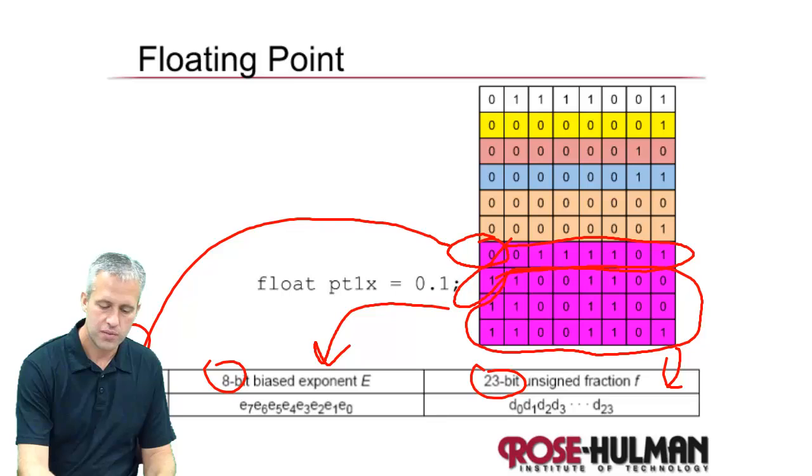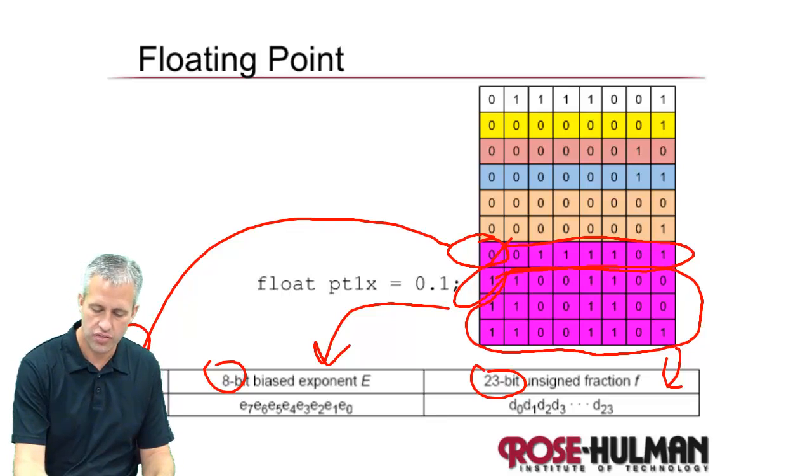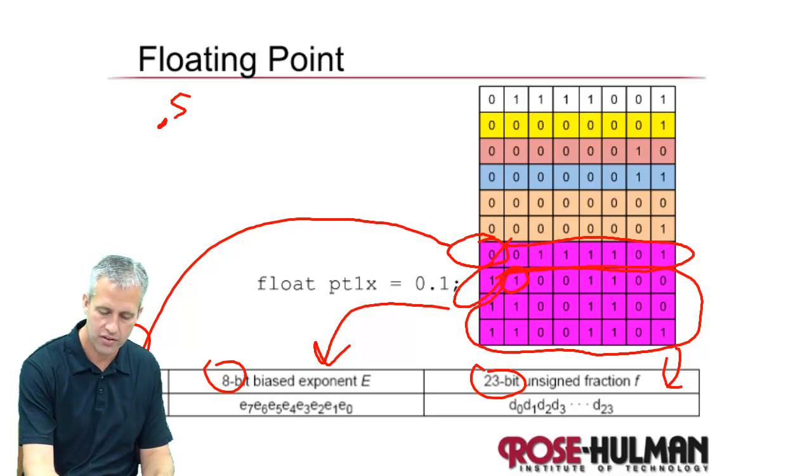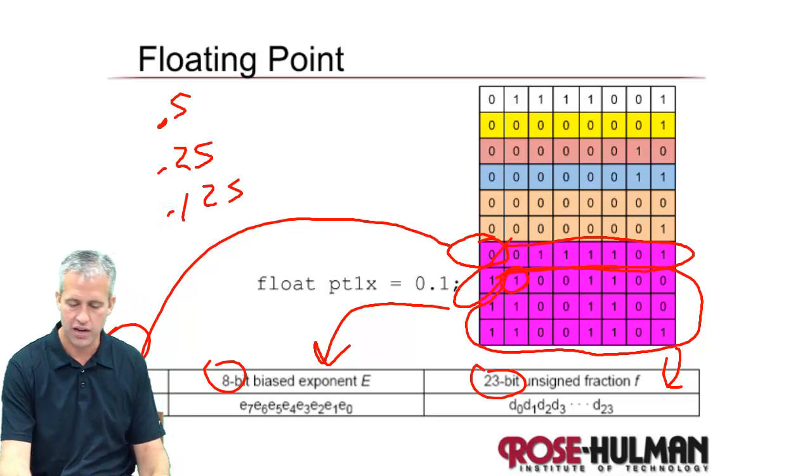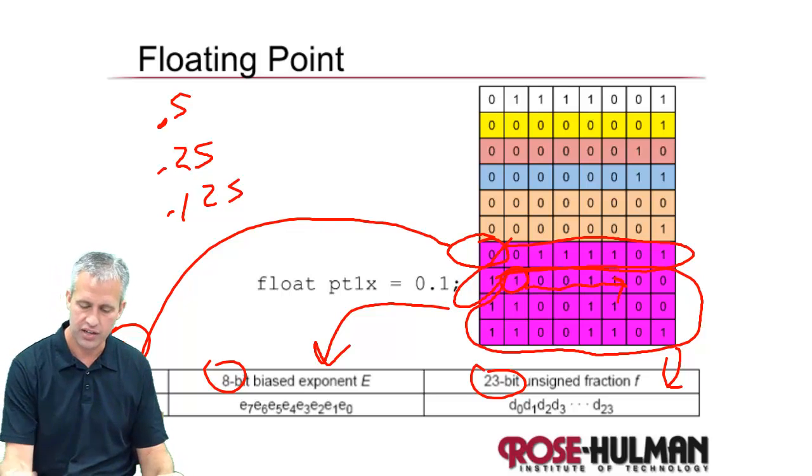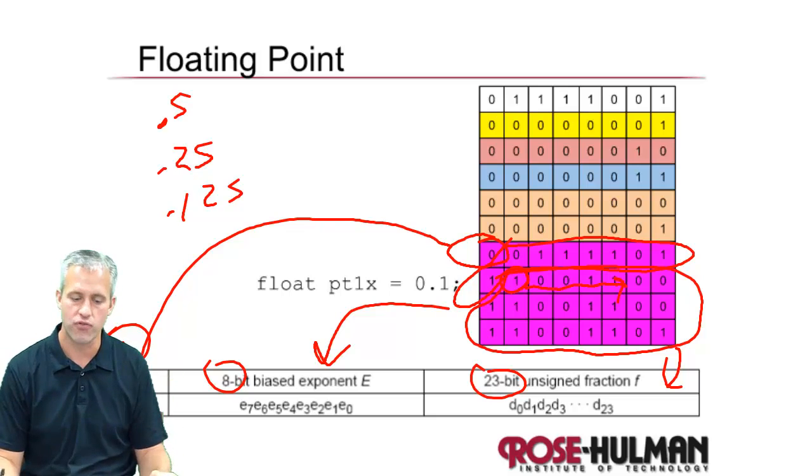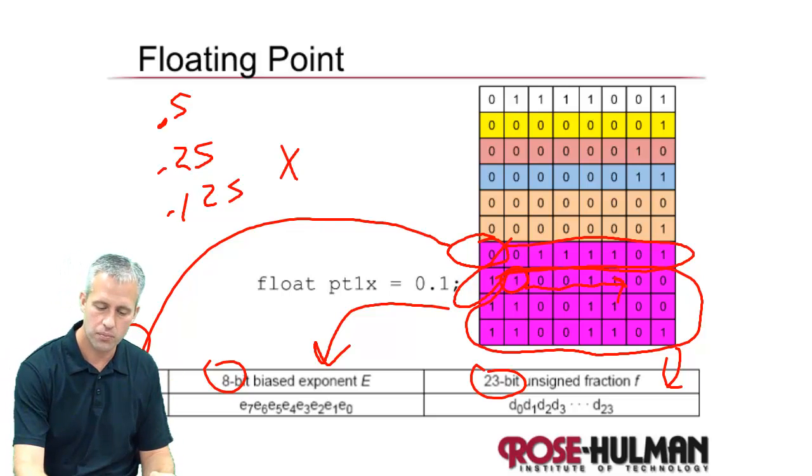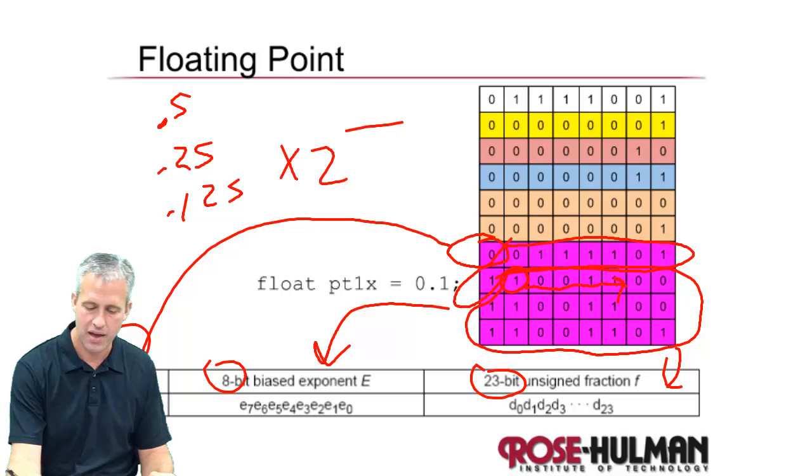Just to talk about what the mantissa is—it's kind of interesting. This first one is whether there should be a 0.5 or not, then the next one's whether there should be a 0.25 or not, and then the next one is whether there should be a 0.125 or not. So this number essentially just adds up to be some fractional thing and it gets multiplied by two to some exponent.